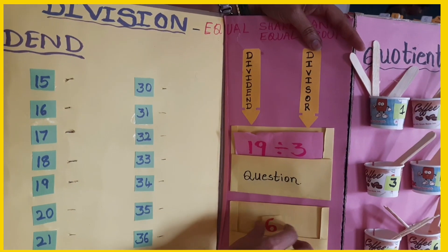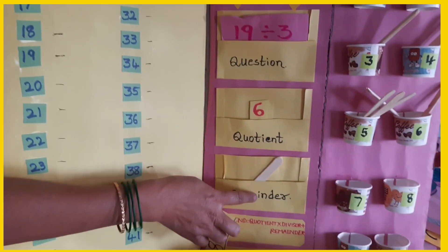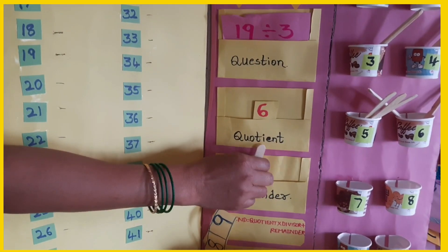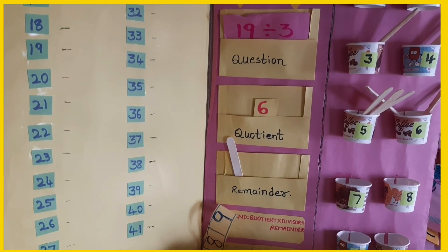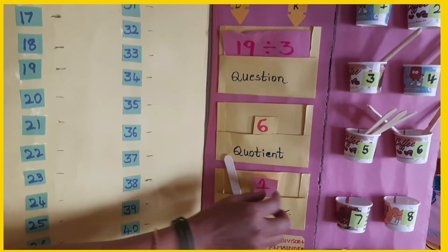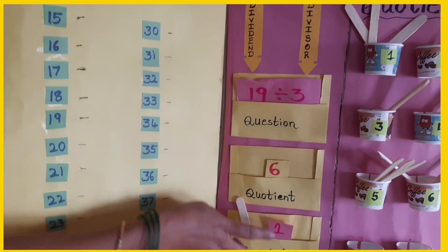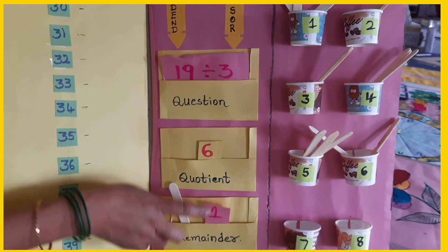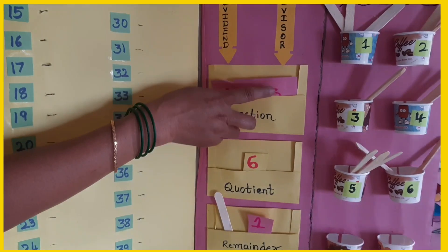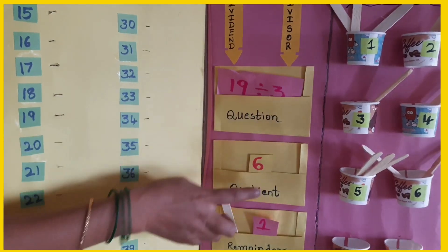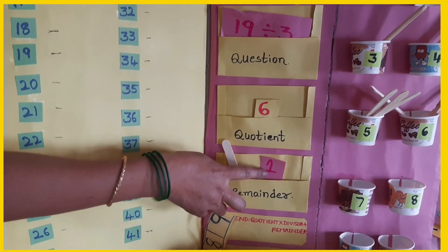Put the number 6 in the quotient box. Reminder is 1. This is 18 plus 1 is equal to 19. So: dividend is 19, divisor is 3, quotient is 6, and remainder is 1.